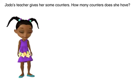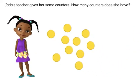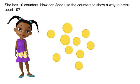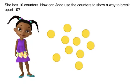Jada's teacher gives her some counters. How many counters does she have? She has ten counters. How can Jada use the counters to show a way to break apart ten?